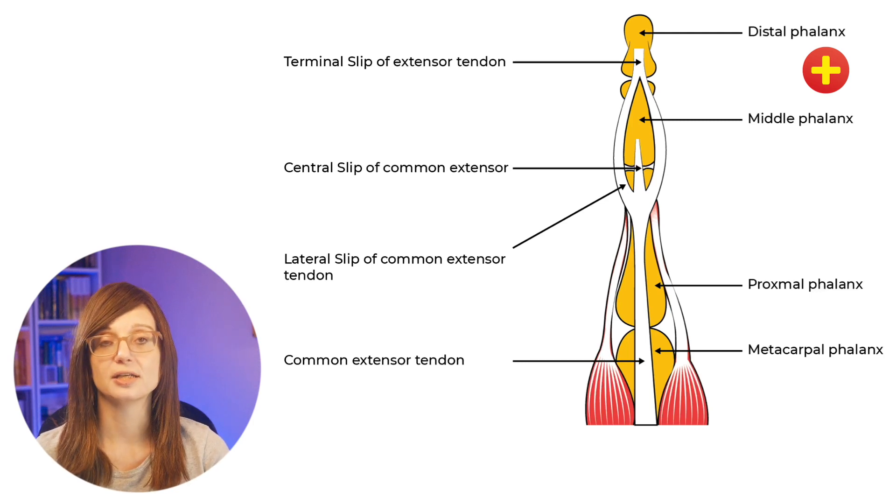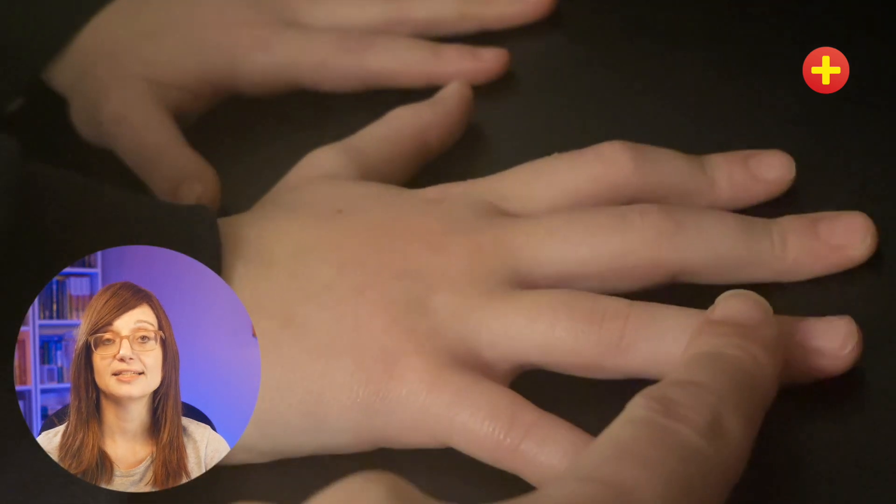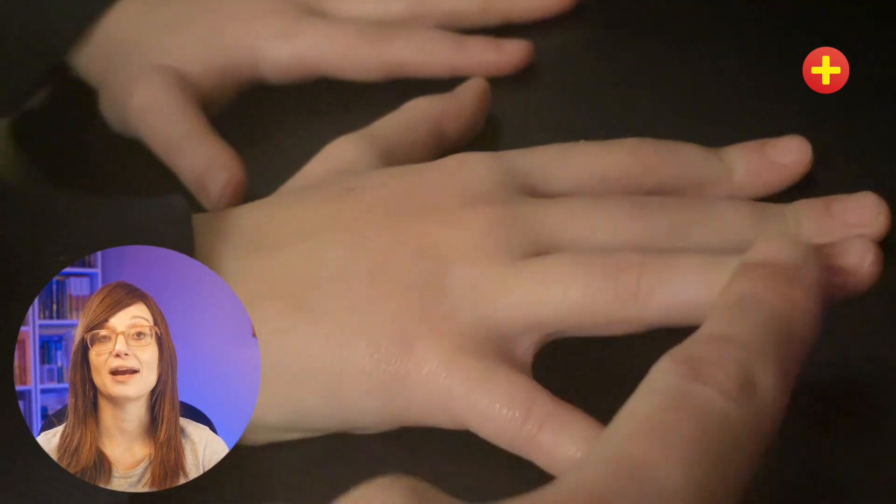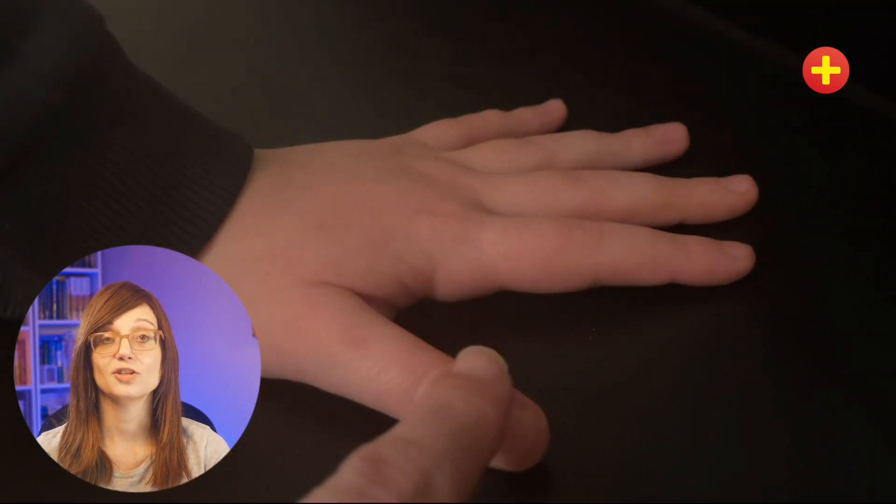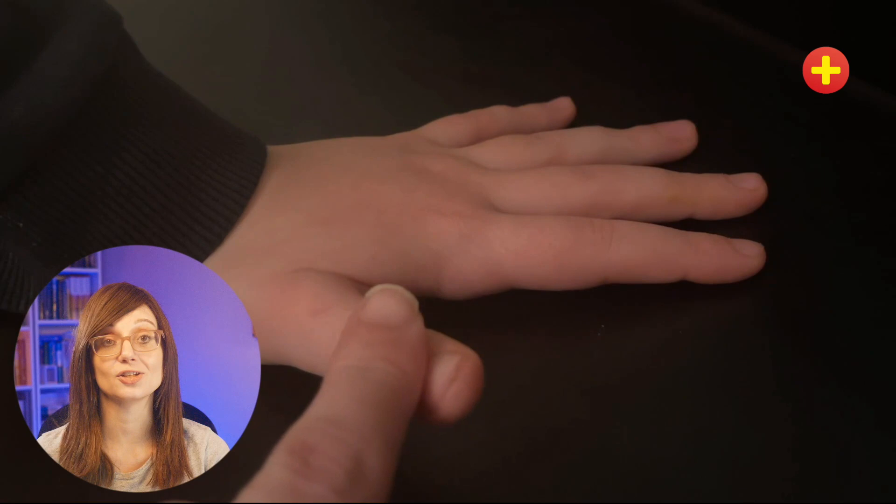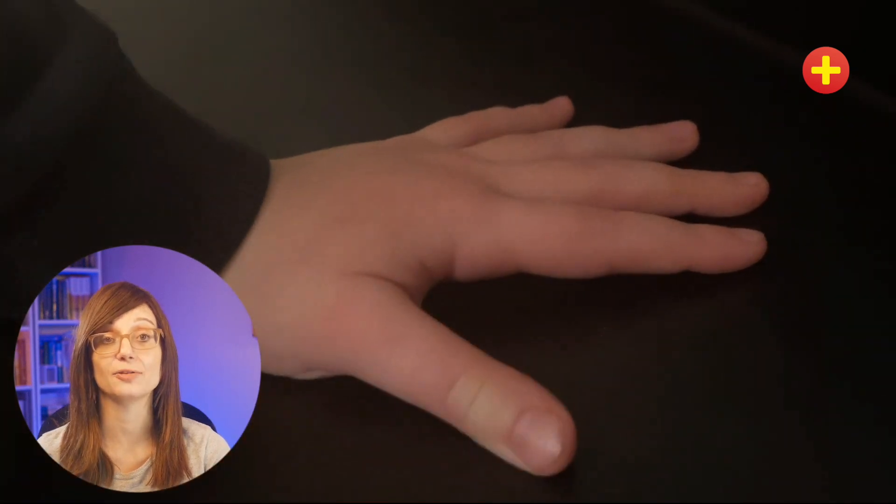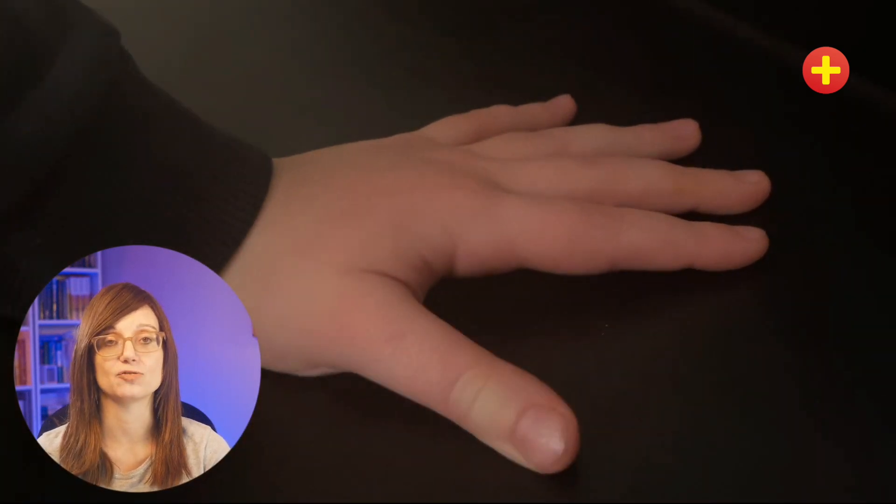So how do we evaluate these injuries? Well, the extensor tendons are assessed by applying pressure to the back of the finger while the patient is attempting active extension. To test the extensor pollicis longus, you ask the patient to place their hand flat on the table and lift their thumb up against resistance.